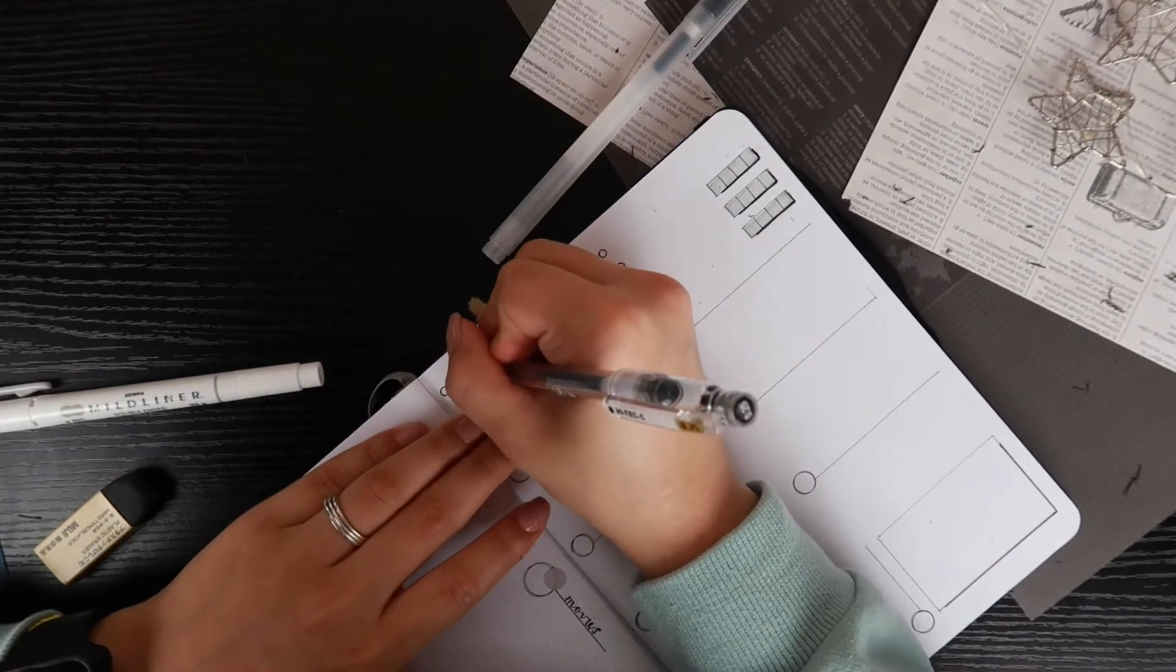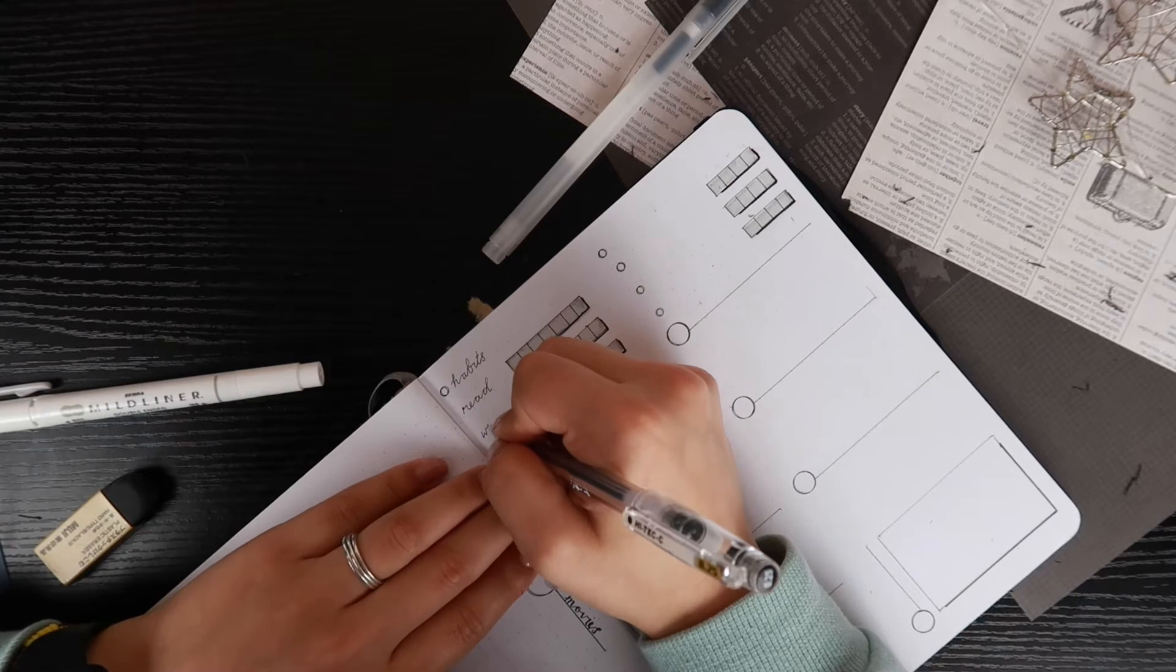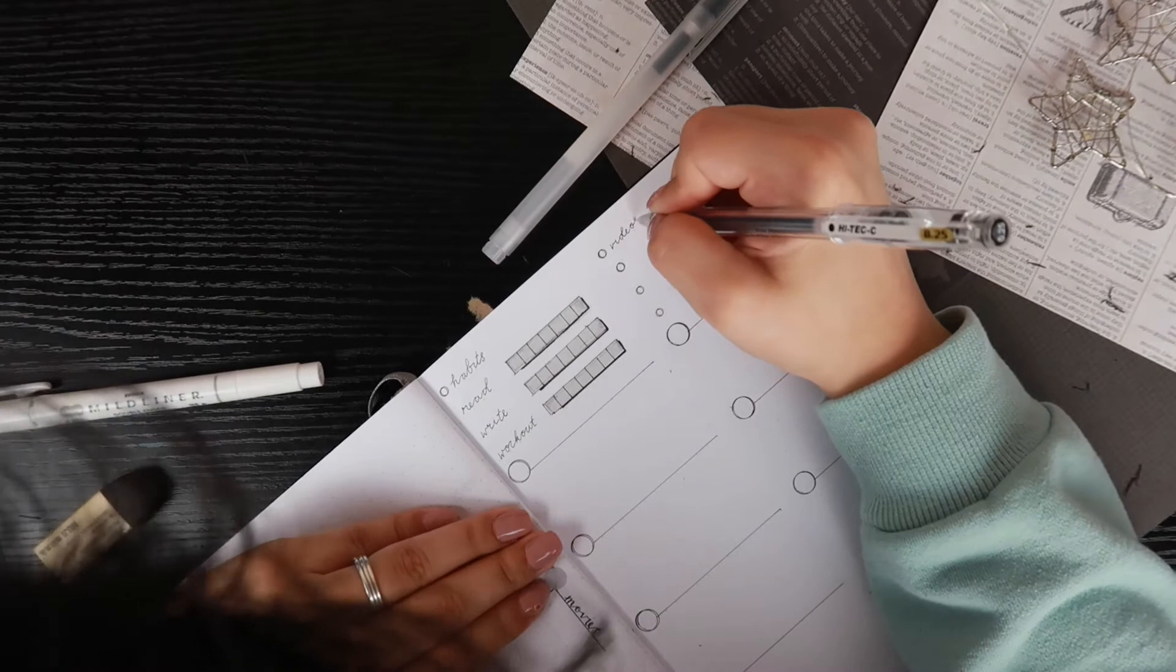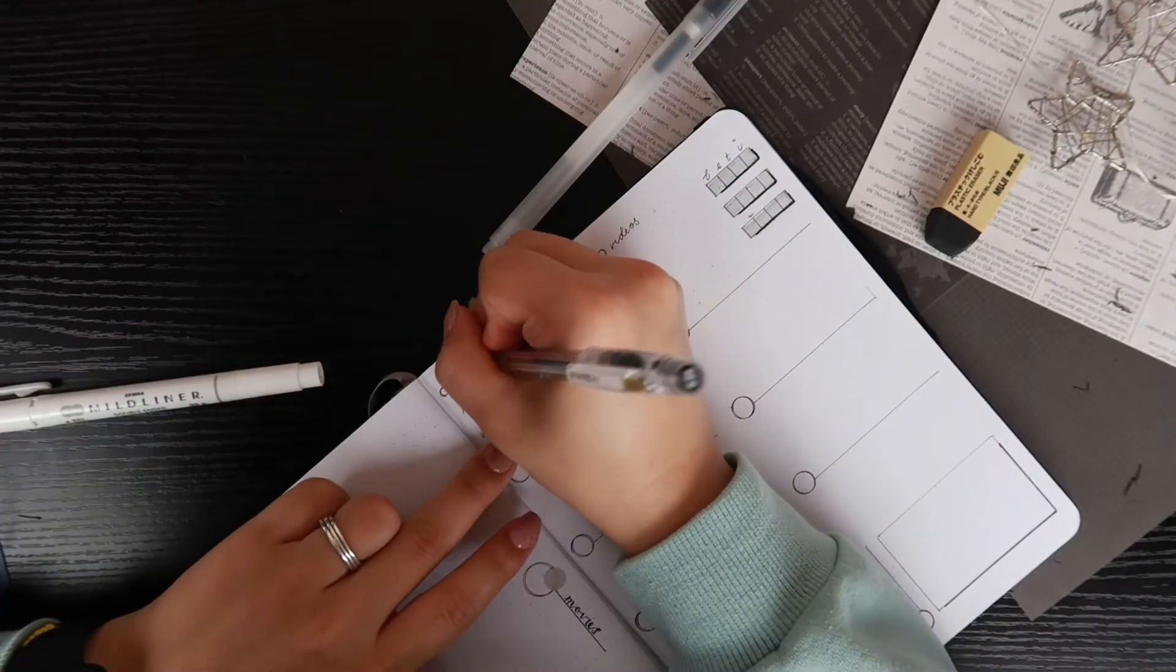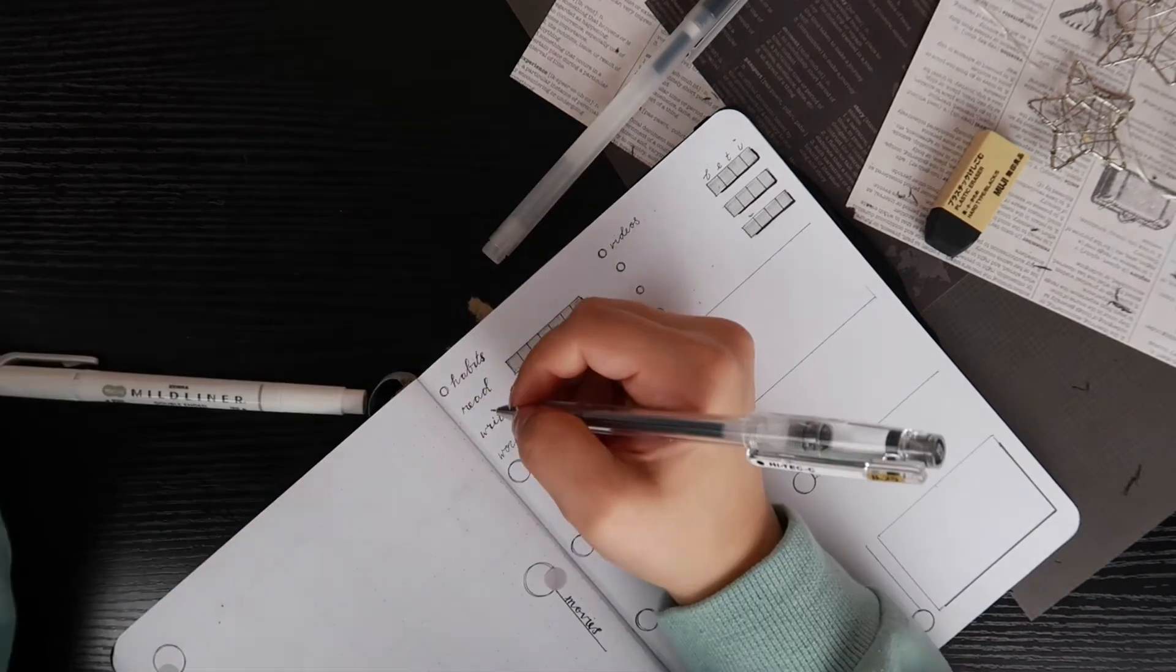And now I'm writing my three habits that I want to track. I want to read, write, and work out. I'm going back in accentuating the downstrokes again to have a more calligraphy effect.